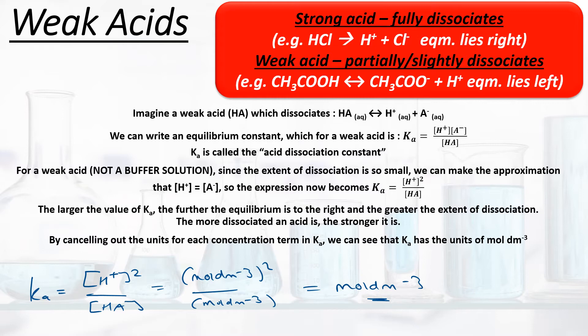Ka has units of mol dm⁻³, and you can work this out by writing the Ka expression and cancelling the units. Remember that concentration is always mol dm⁻³. On the top we have two lots of mol dm⁻³, on the bottom we have one lot of mol dm⁻³. Cancelling one from the top and one from the bottom, we are left with mol dm⁻³.